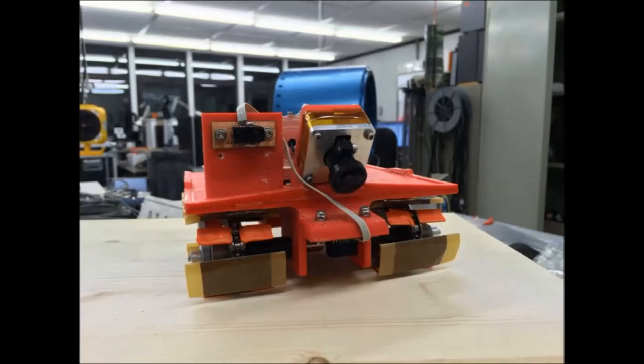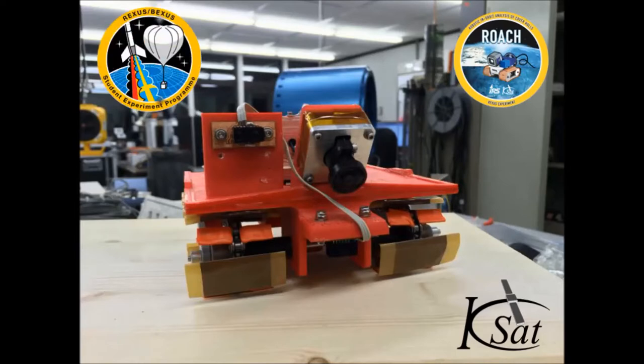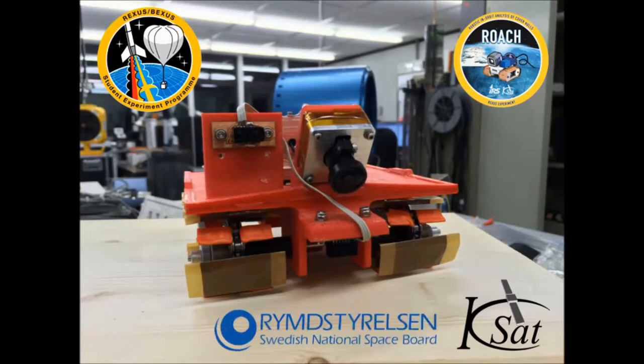In March 2018, CASAT will launch its second rocket experiment, Roach, to the edge of space. It will be conducted on board the sounding rocket as part of the REXIS-BEXIS program by the Swedish National Space Board and the German Aerospace Center.